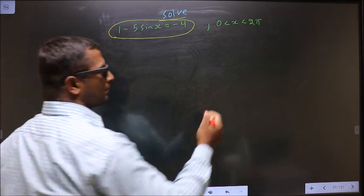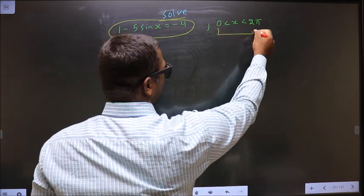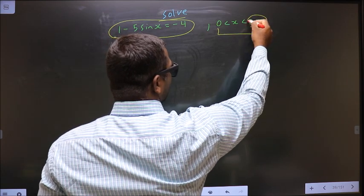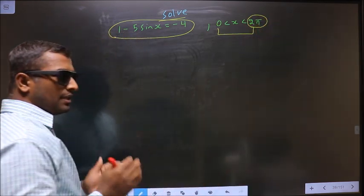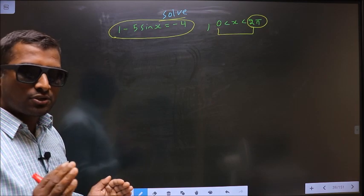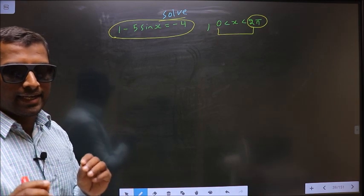And also it should lie in this interval. Here you have 2π, that tells you that you should get the answer in radians.